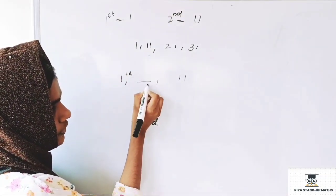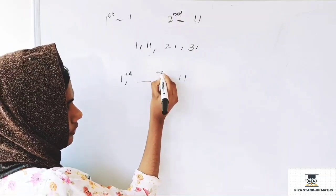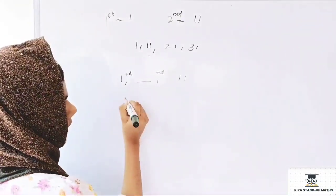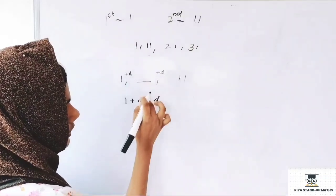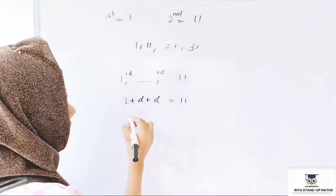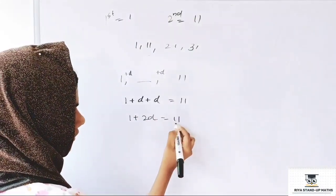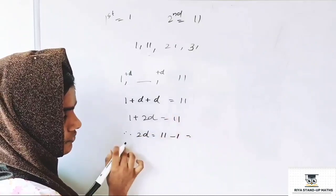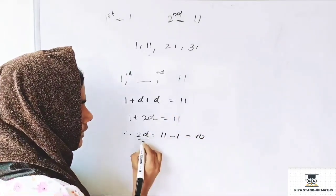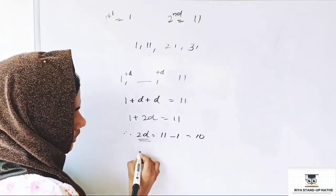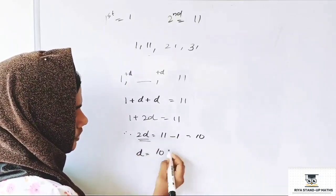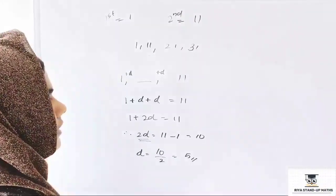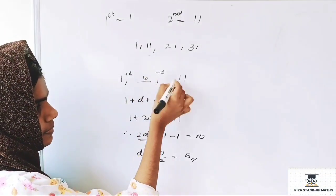We use the second term. We will add the third term — one more than the second term. We will add 11. So 2d is equal to 11 minus 1, which is equal to 10. Therefore, 2d equals 10, and the common difference d equals 10 divided by 2, which equals 5. Then 1 divided by 5 is equal to 6, and 6 plus 5 is equal to 11.